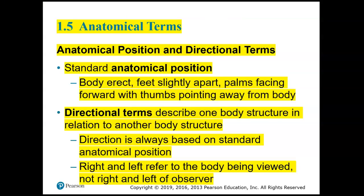Now we're going into anatomical terms or medical terminology. For this chapter, the most important topics are the medical terminology topics where you learn terms that describe directions in relation to the human body — directional terms — and also the terms for body regions. Secondly, learn about homeostasis and negative and positive feedback. Third, make sure you know those 11 organ systems and a general description of each.